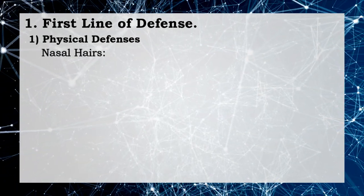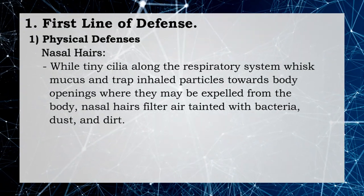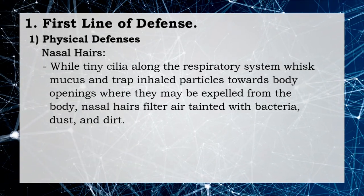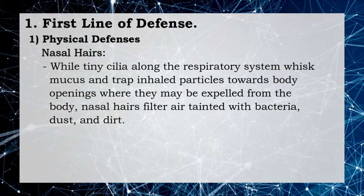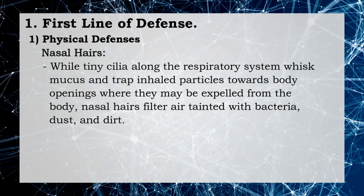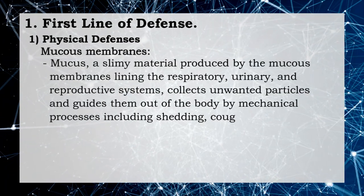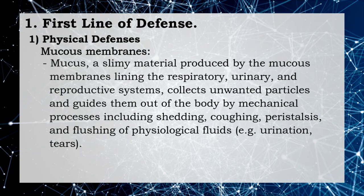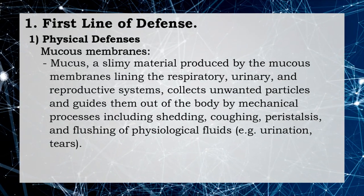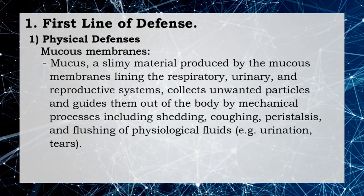Second, nasal hairs and tiny cilia along the respiratory system whisk mucus and trap inhaled particles toward body openings where they may be expelled. Nasal hairs filter air contaminated with bacteria, dust, and dirt. Lastly, mucus is a slimy material produced by mucous membranes lining the respiratory, urinary, and reproductive systems; it collects unwanted particles and guides them out of the body.